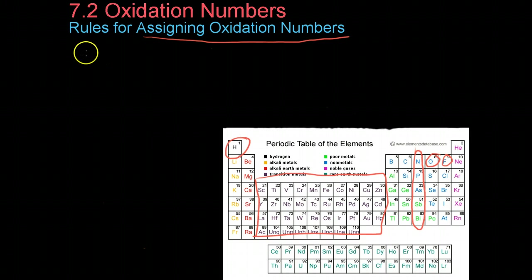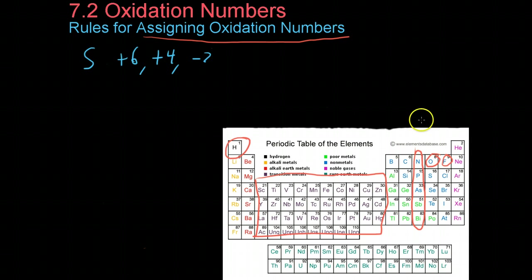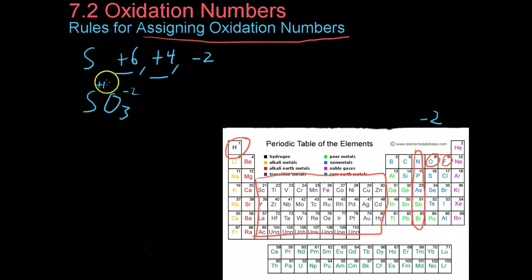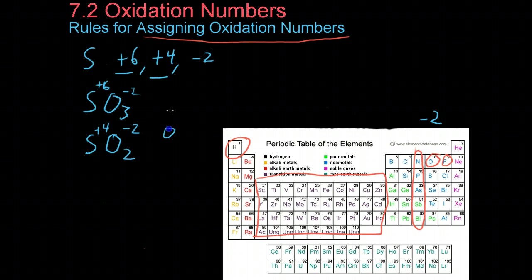There are a few main group elements that have multiple oxidation states. For example, sulfur can have the oxidation state +6 (as we just saw), +4, or -2 (its group-based oxidation state). Because sulfur has these different oxidation states, it can form sulfur trioxide — where the -2 from three oxygens and the +6 from sulfur make the molecule neutral — or sulfur dioxide, where the -2 and +4 also balance to make it neutral.